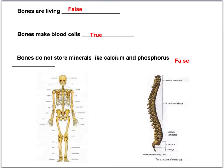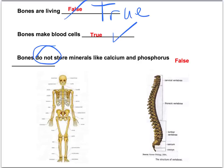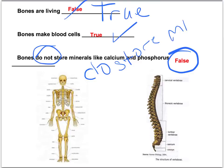There's an error in my PowerPoint here — bones are living. They're full of blood vessels and made of cells, and cells are alive. Bones make blood cells — that's true. And bones do NOT store minerals — wait, 'do not' is incorrect there; they DO store minerals. All of this is found in the notes at the beginning so you'll be able to look at those.